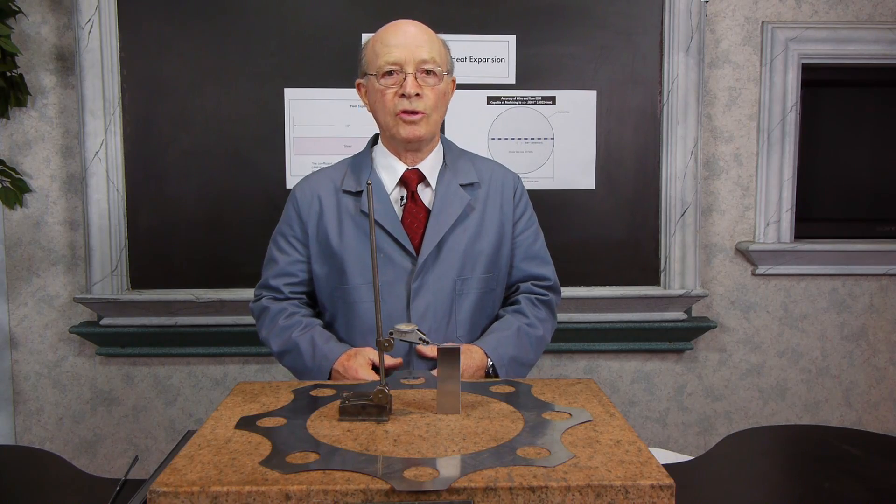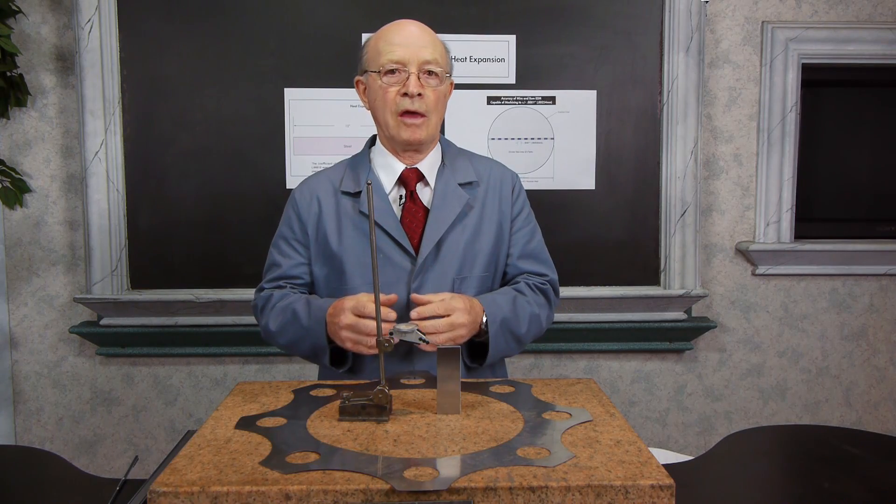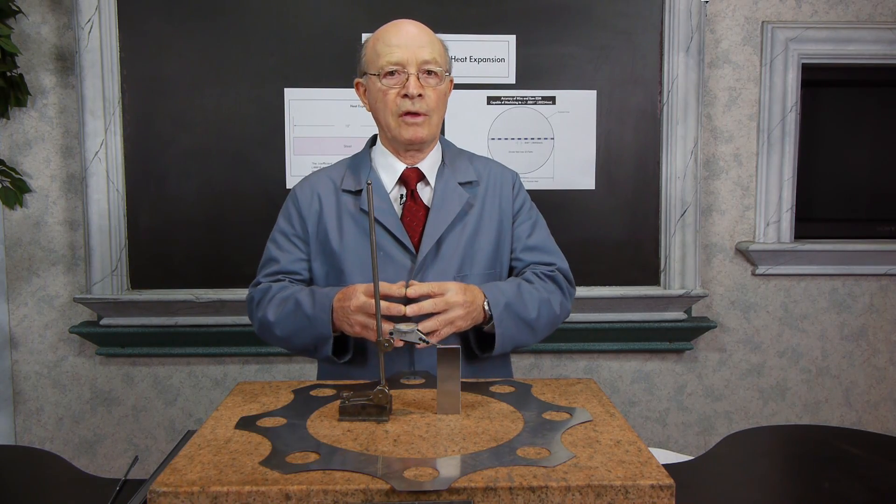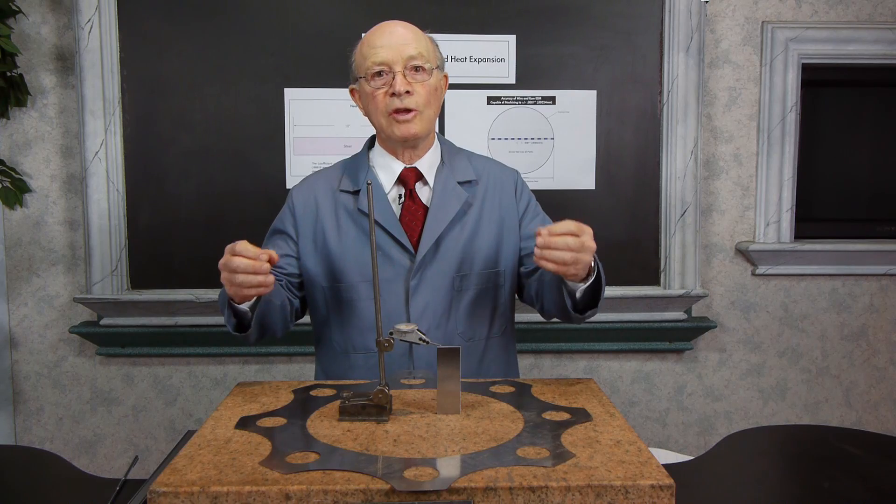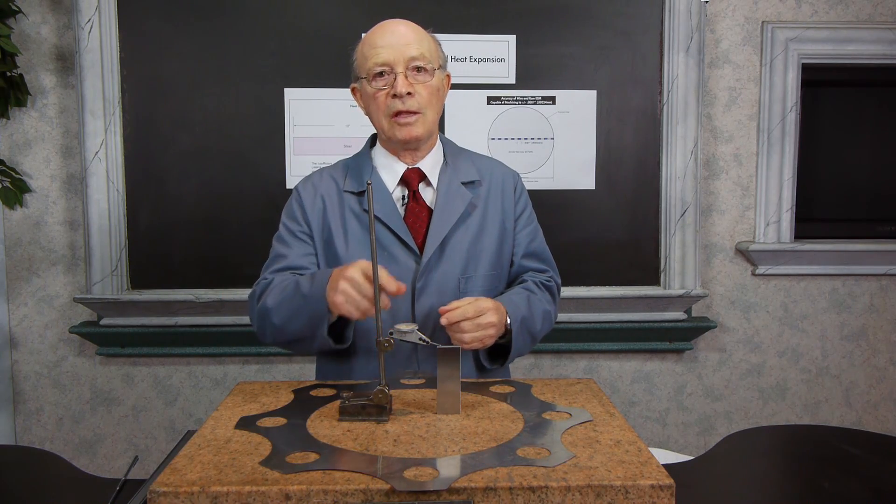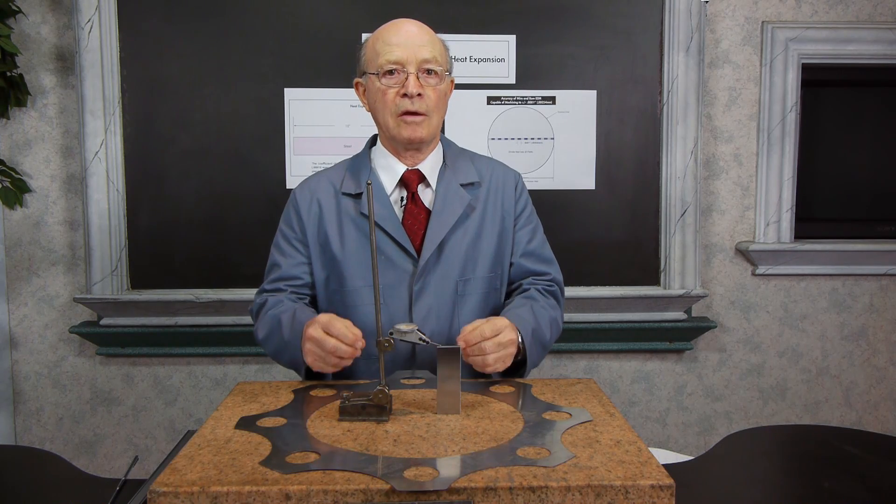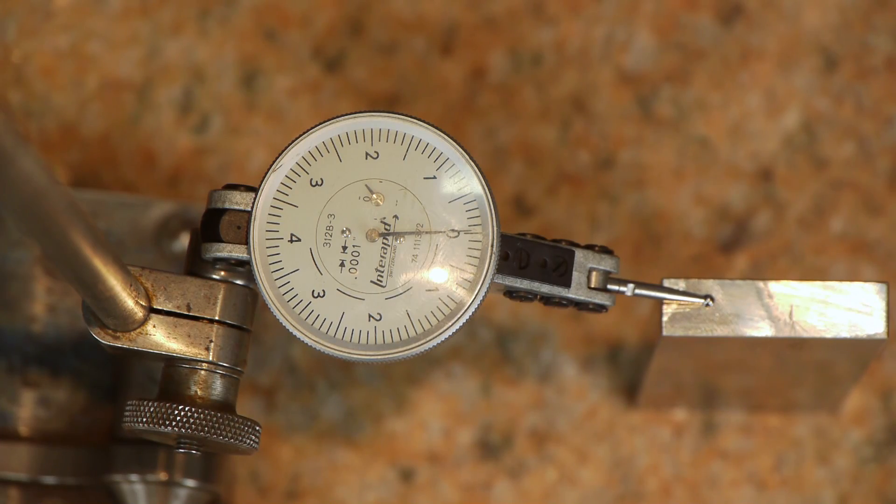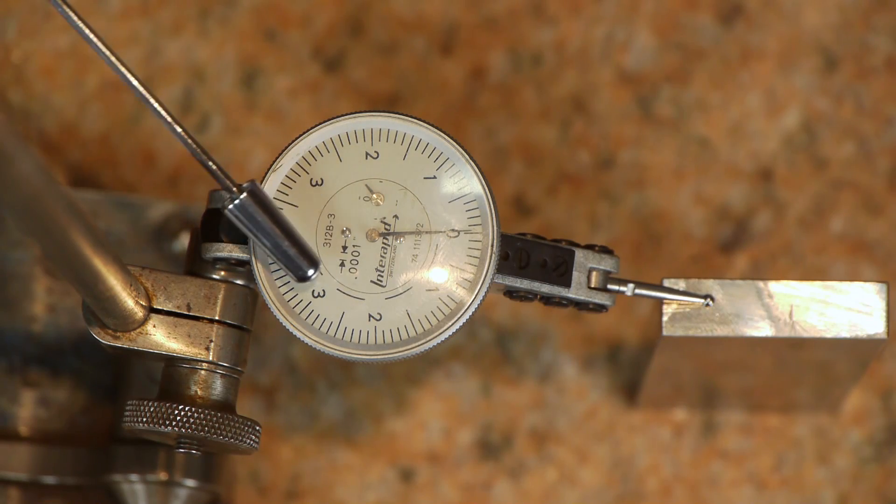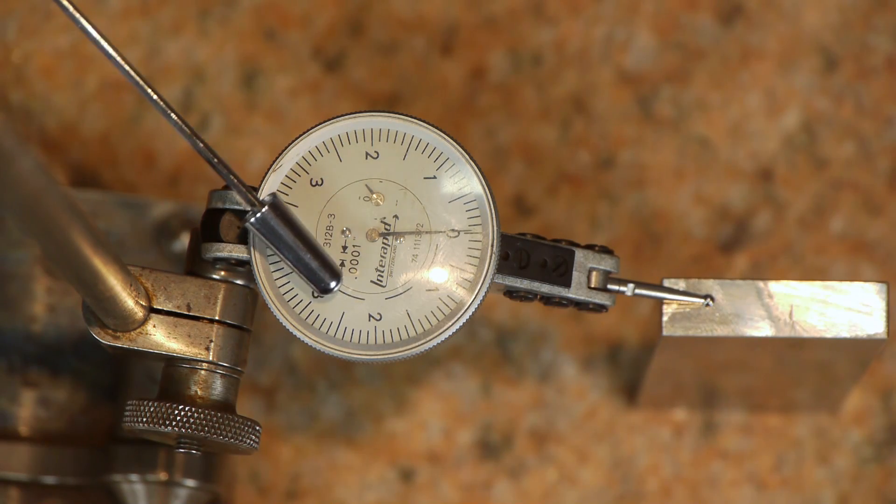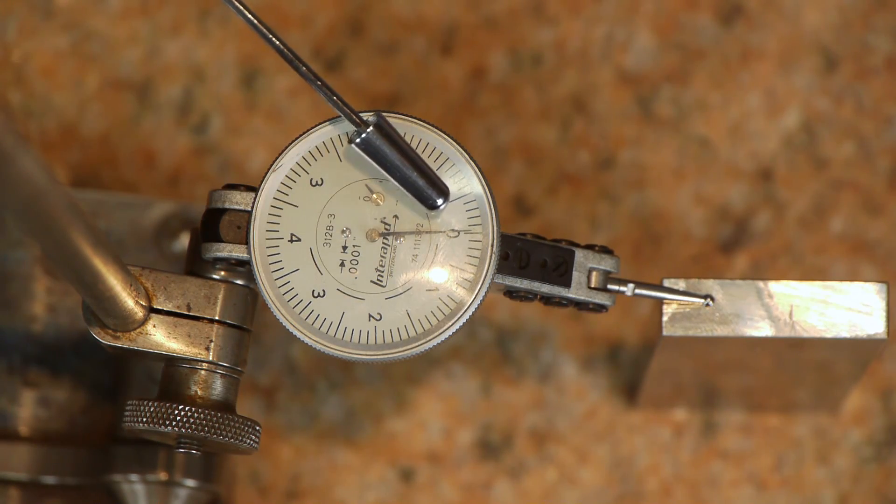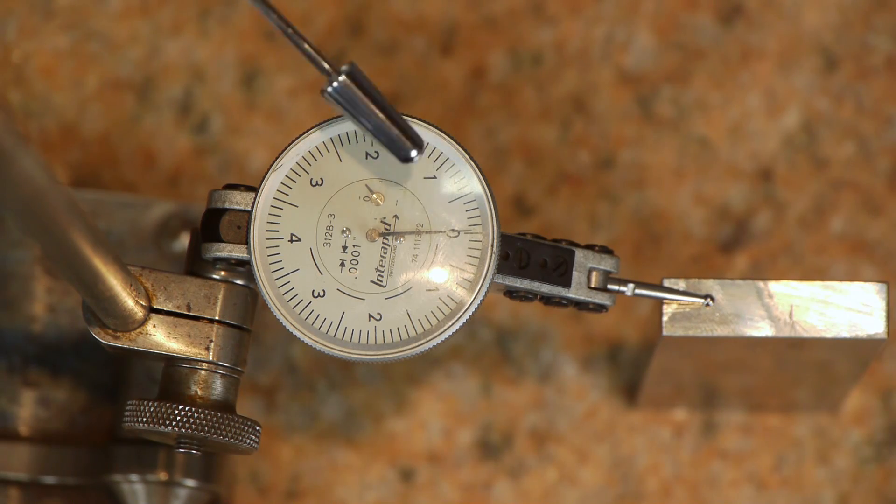I'd like to demonstrate to you the thickness of a human hair. Many people think of a human hair as extremely accurate, but I'm going to demonstrate with this tenth indicator and this gauge block the thickness of a human hair. This is what we call a tenth indicator. Each line is .001. And this is one-thousandths, this is two-thousandths, and this is two-and-a-half-thousandths. From here to here is the average thickness of a human hair.